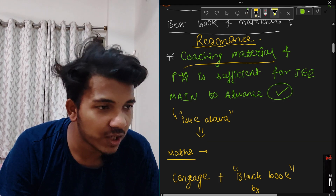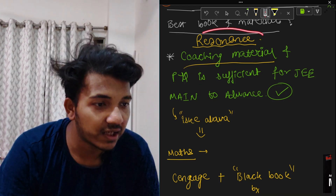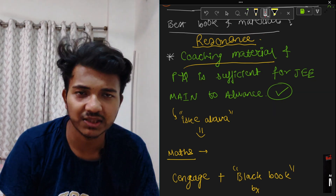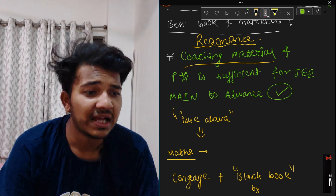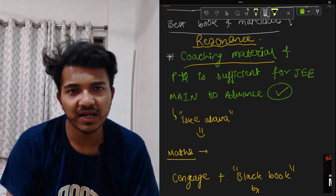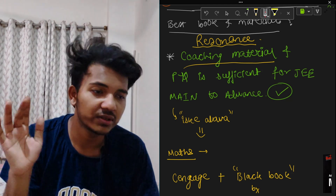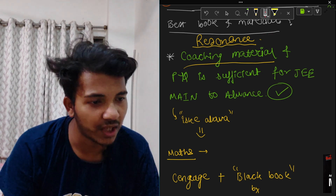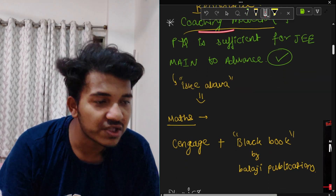If you are in a coaching other than Resonance, use your own coaching's material. You can search online or find material from program groups or pirated websites. If you are in coachings like Allen or Fiitjee, there is no doubt — use their material. If you can manage Resonance material, use that. Otherwise use your own coaching material.